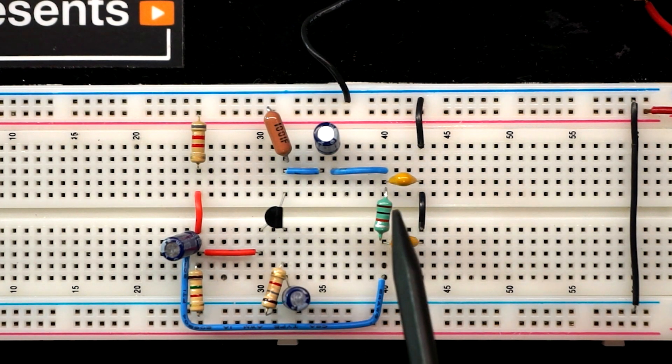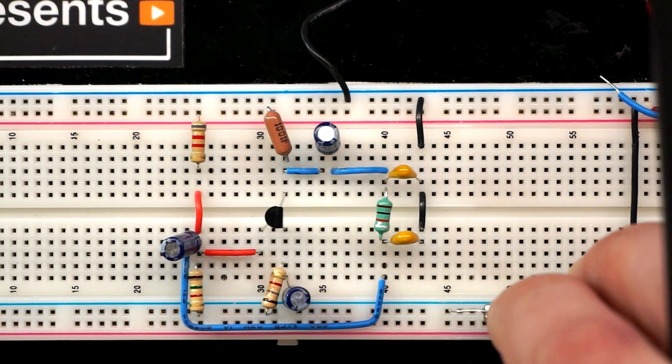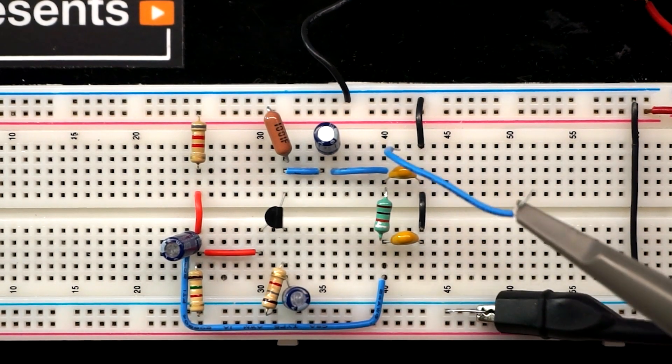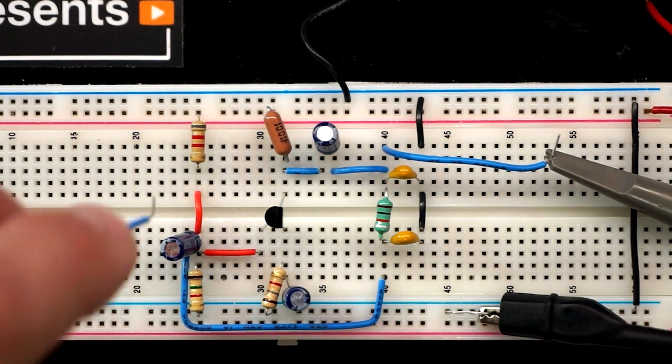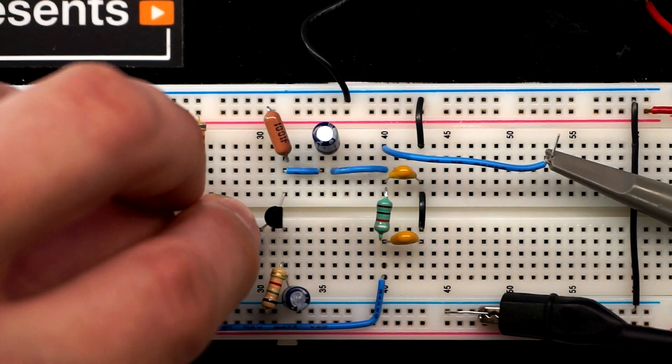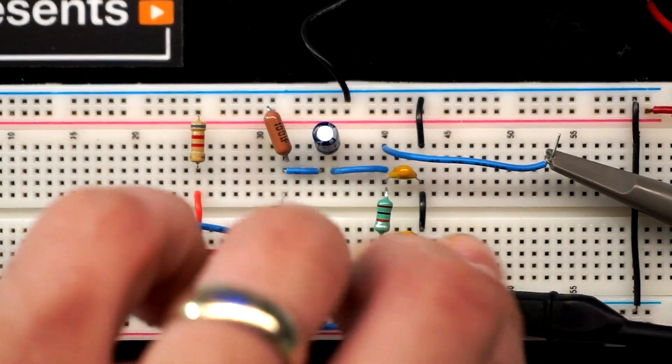We have our collector resistor here. These two set our gain. And of course we have our inductor and our two capacitors here. What I'm going to do is connect my oscilloscope probe to the output of the tank circuit. In fact, I'm going to connect a second probe so that we can see the signal at the base of the transistor, which should be 180 degrees out of phase. We'll take a look at both of those.